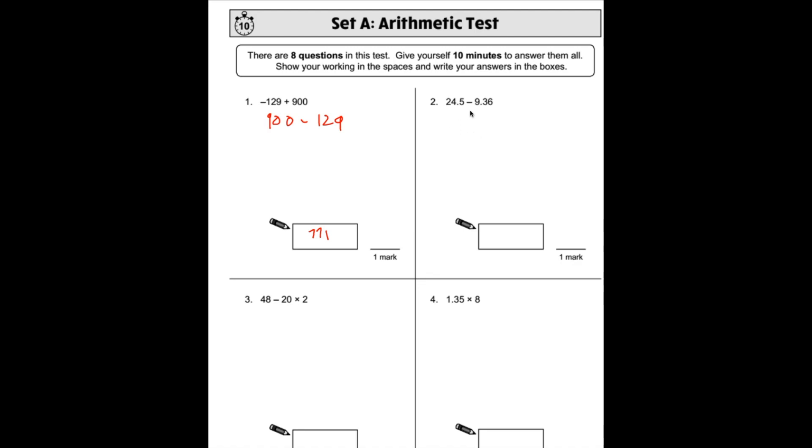Number 2: 24.5 - 9.36. For this one I'm going to do a form of column subtraction. So lay it out like that.